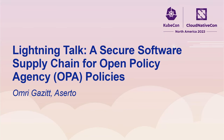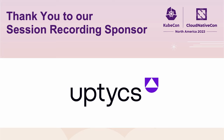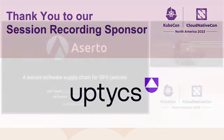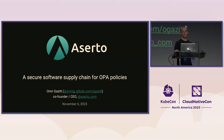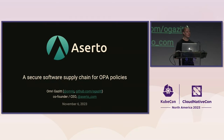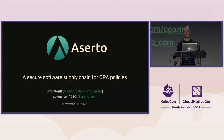It's an honor and a pleasure to be opening this KubeCon. My name is Omri Gazeet. I'm the co-founder and CEO of Acerto. Acerto is a cloud-native authorization company, and we produce an open-source project called Topaz that uses OPA — the Open Policy Agent — really heavily. So we care a lot about secure software supply chains for OPA policies.